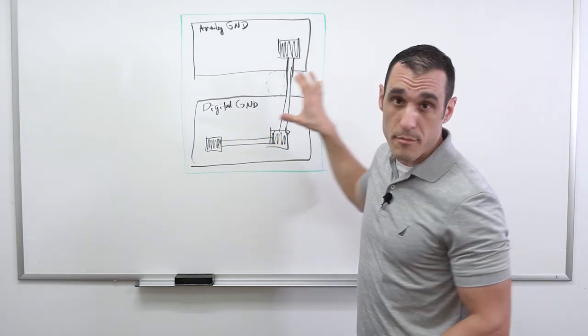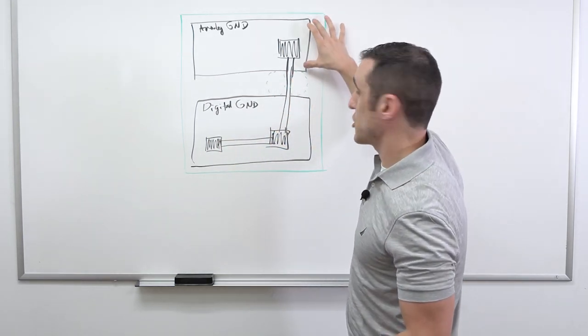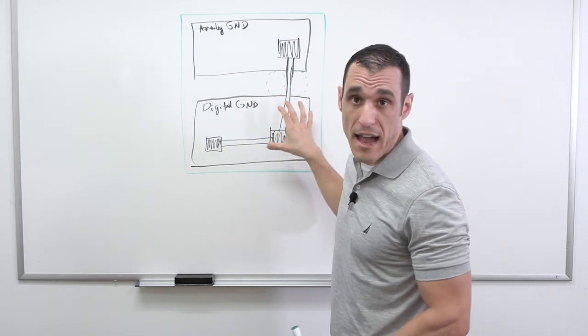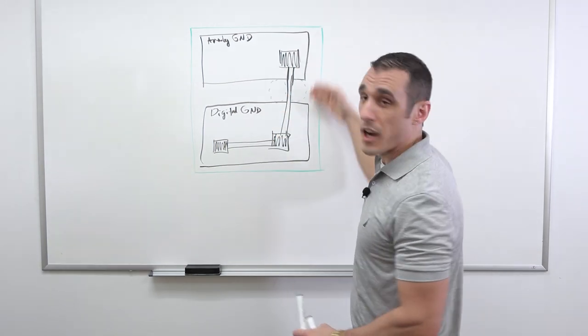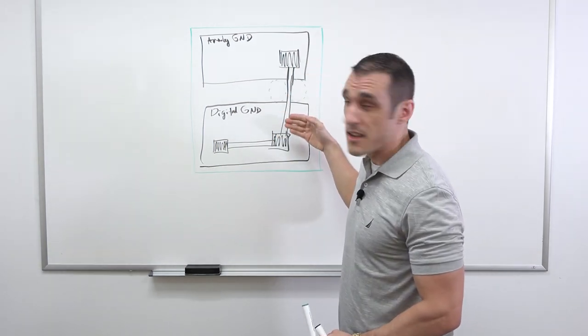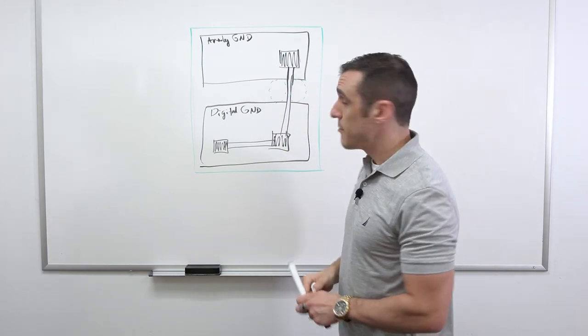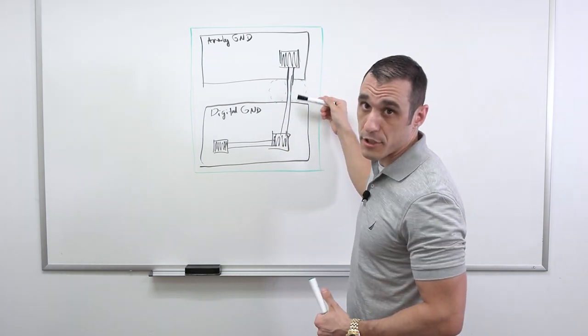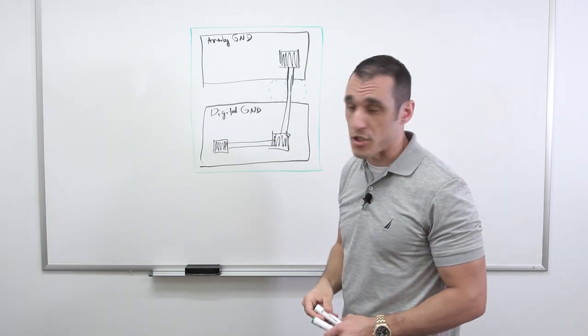Remember, the whole point in a mixed signal PCB is that you have an analog section that interfaces somehow with a digital section. But if you try and separate the ground planes like this, you're going to create an EMI problem because there is no clearly defined return current as you do this routing between the two sections.